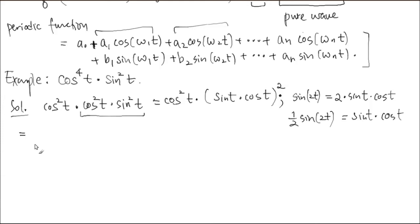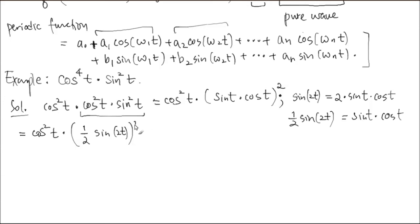So I'm going to write that: sine 2T equals the inside there. But we don't have a 2, so I'm going to solve for it — divide both sides by 2. Then it's going to be (1/2) times sine 2T. Sine 2T is a pure wave — the product of two pure waves became one pure wave. So I can replace sine T times cosine T with this pure wave.